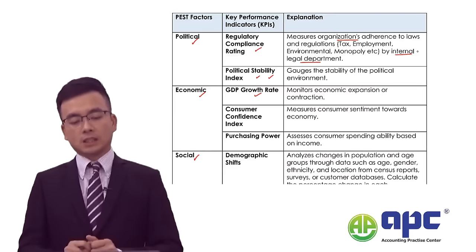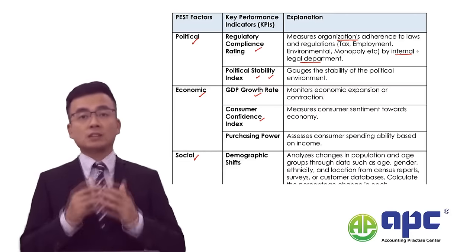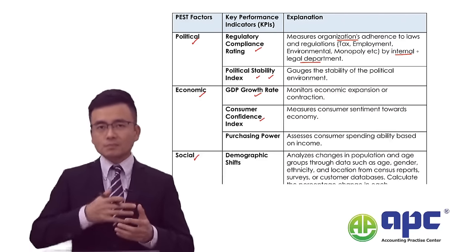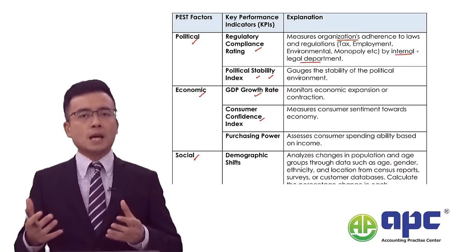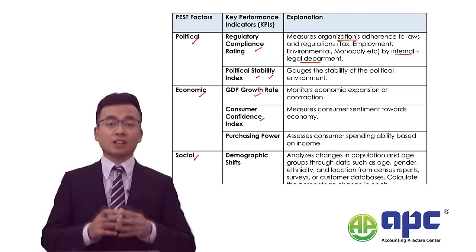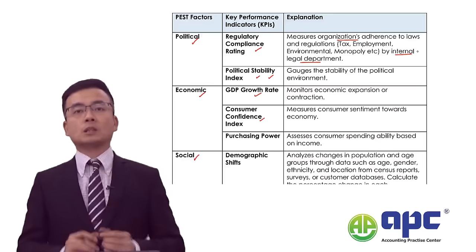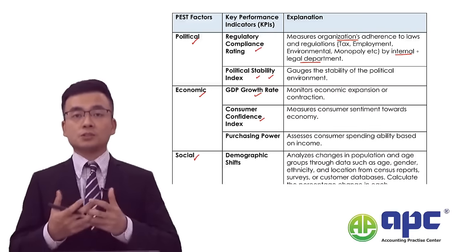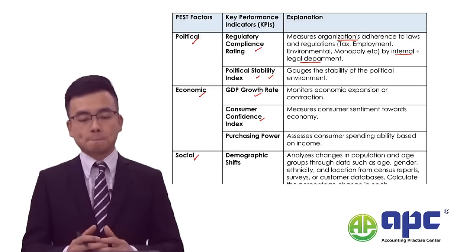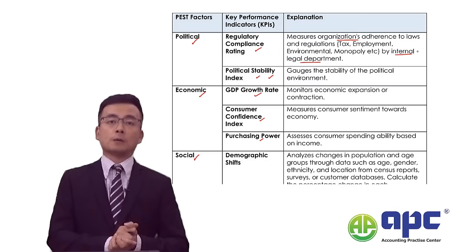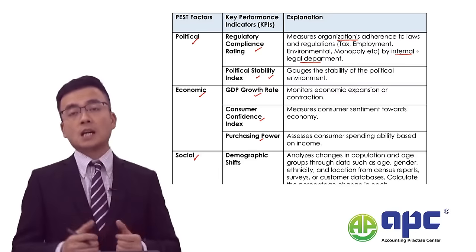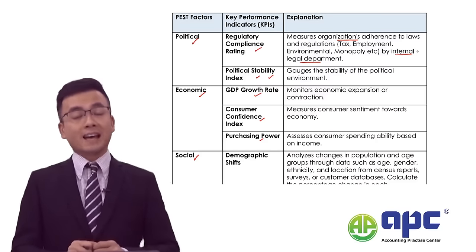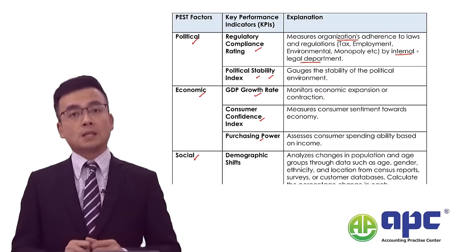We can also think about the consumer confidence index. If consumers are not willing to spend money, this is bad for the economy, leading to deflation — prices fall, everyone makes a loss, and no one is willing to spend. We would expect the government to decrease interest rates to boost the economy. We can also assess purchasing power — the ability of consumers to buy products. If purchasing power is strong, sales for luxury items would be high.